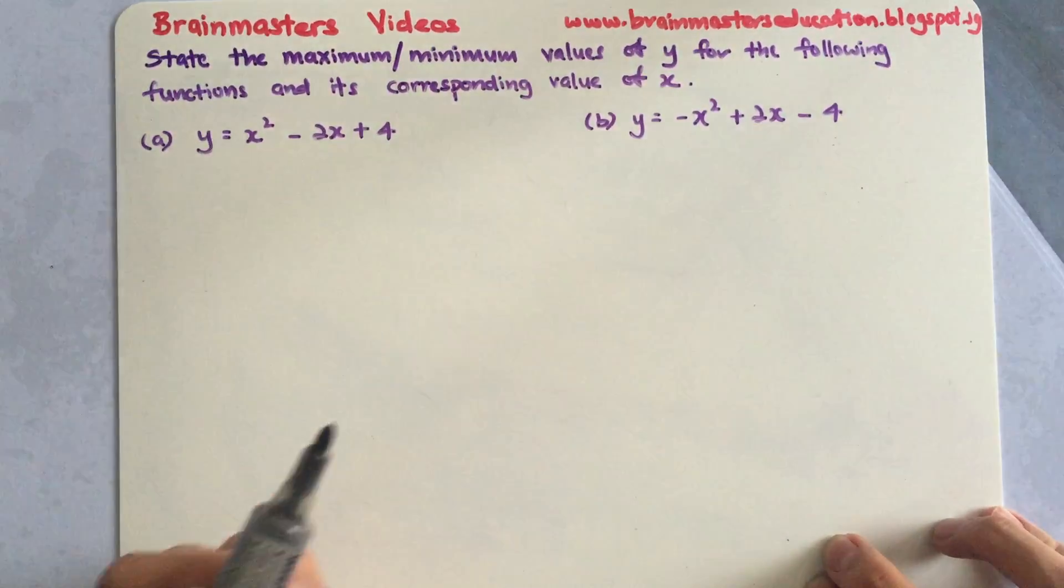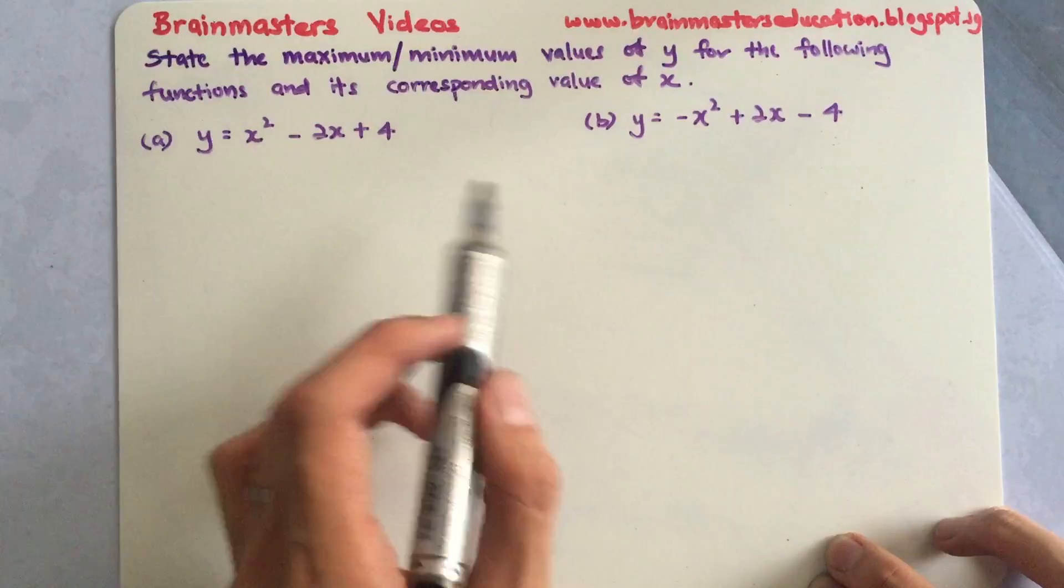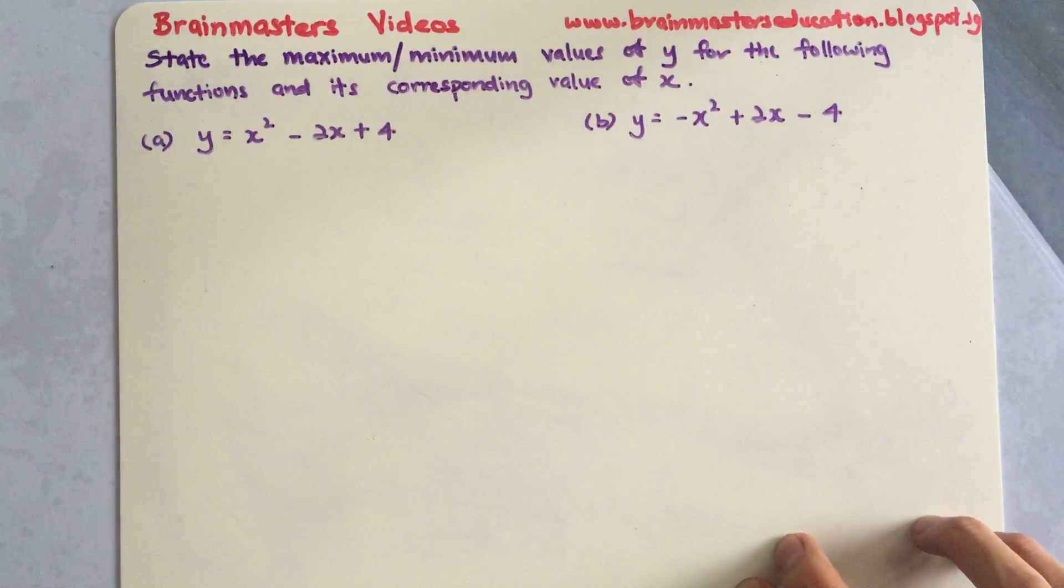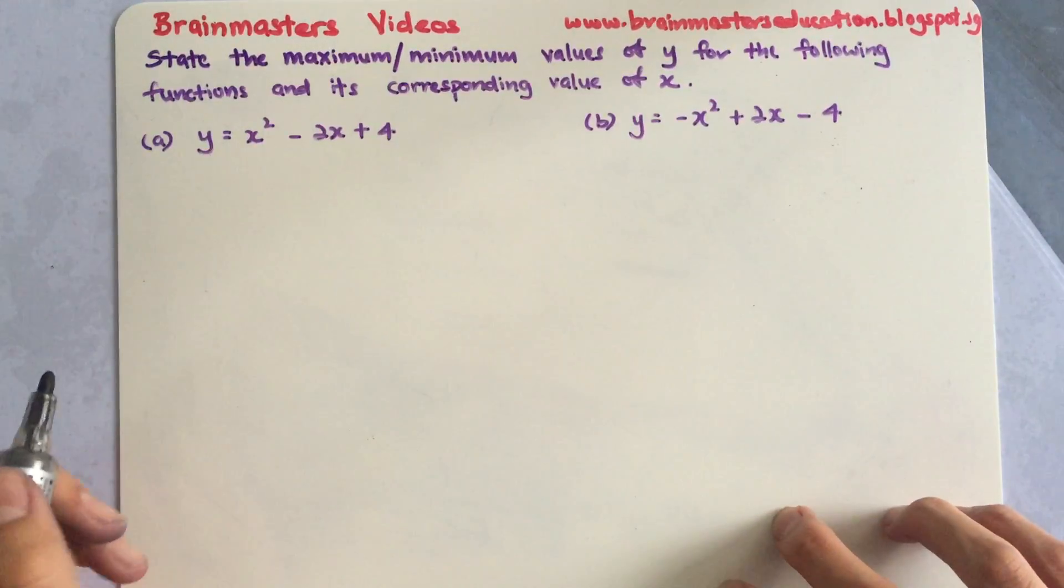If they want to find the maximum and minimum values using the graph, you can refer to my previous videos on complete the square. At this stage for this kind of question you require complete the square knowledge, so I will do the complete the square again.